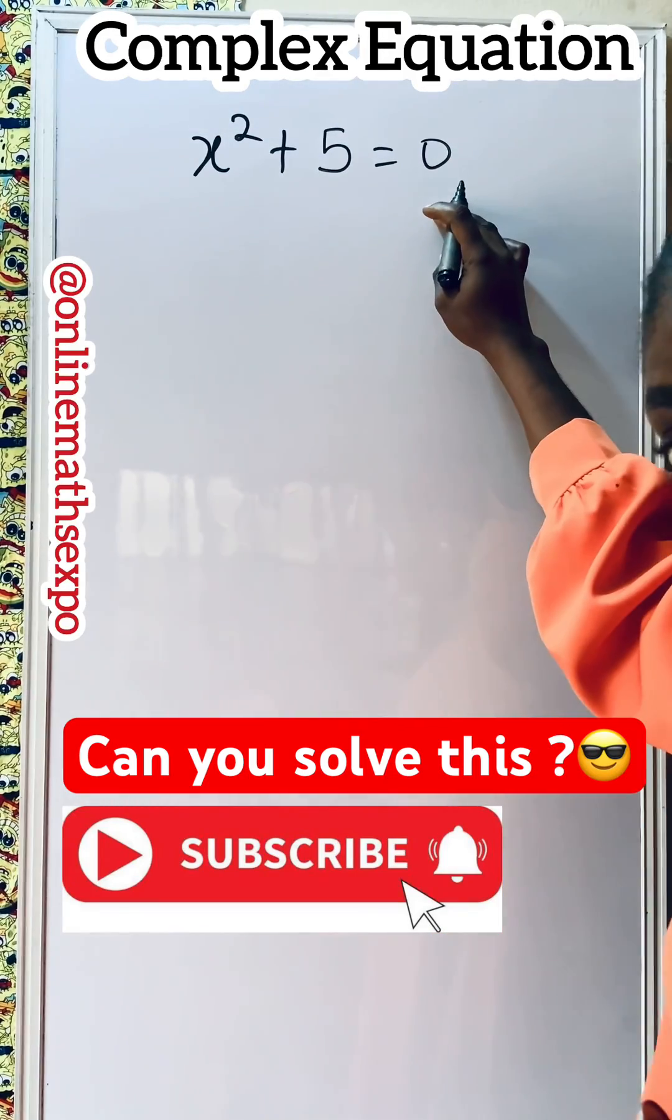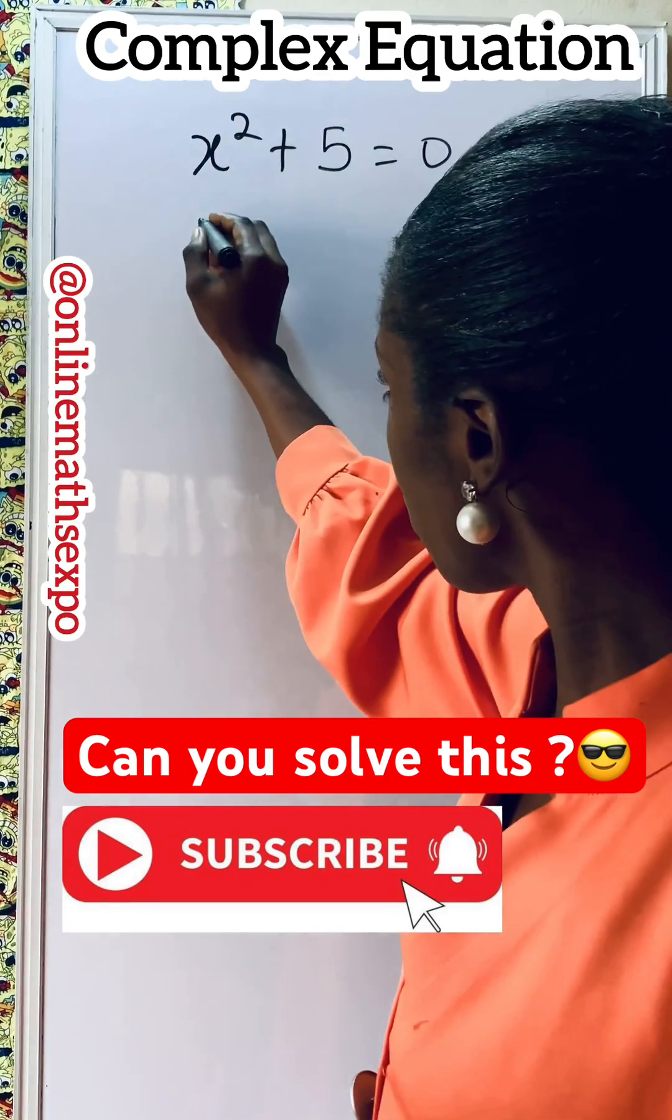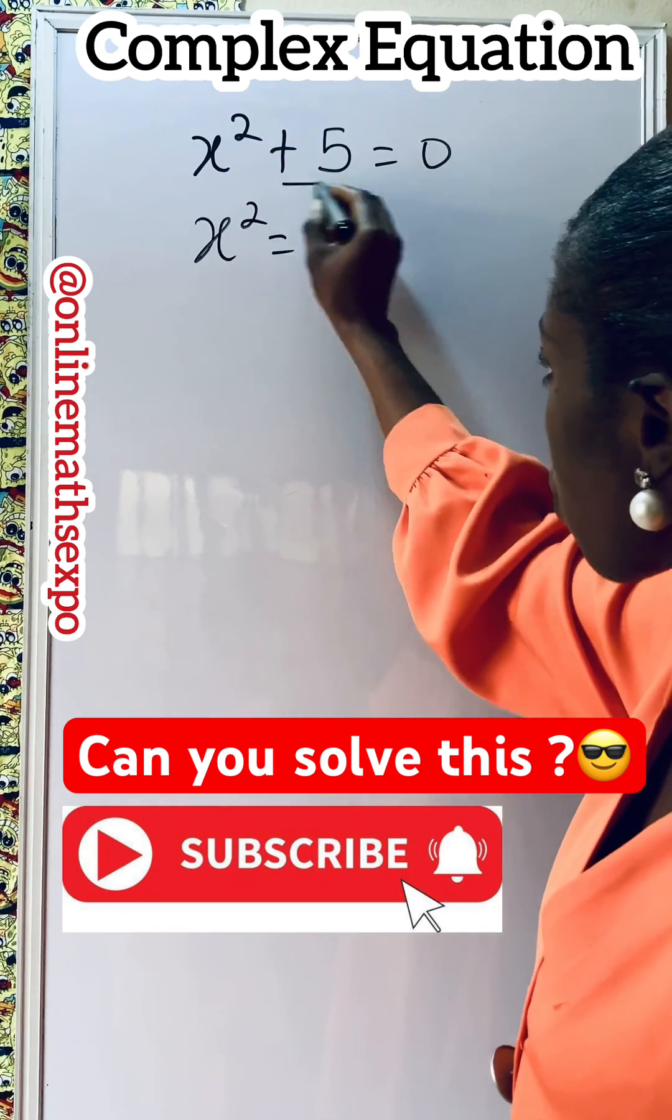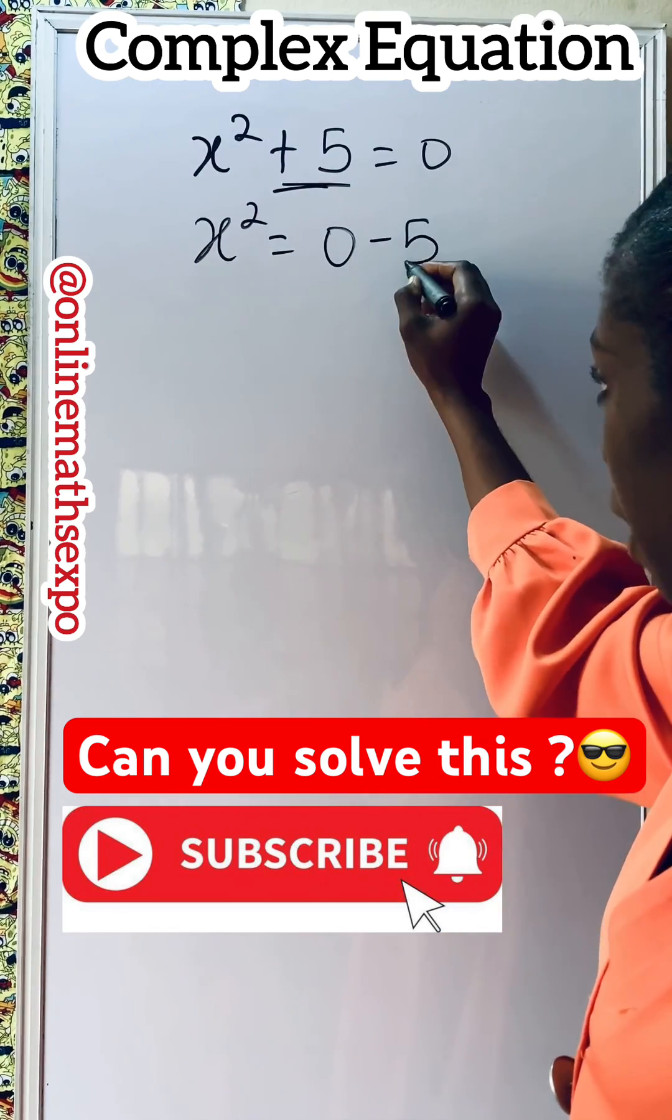To solve this equation, what do you do? You are going to have x squared is equal to... Transpose this, it will be negative 5.